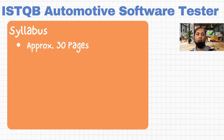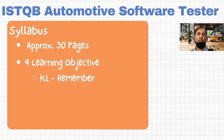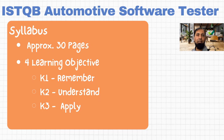Each paragraph of the syllabus is assigned to a cognitive level. There are four different learning objectives, named K1 to K4. K1 means you just need to remember the information provided. If a paragraph is labeled K2, you have to understand it. K3 means you not only need to understand but must be in a position to apply the knowledge provided.